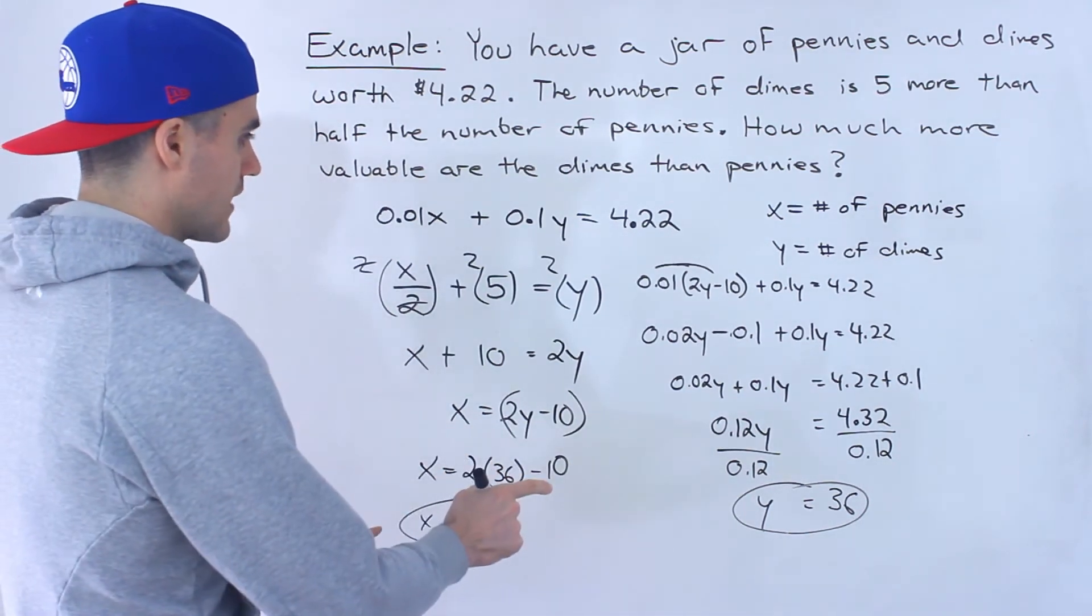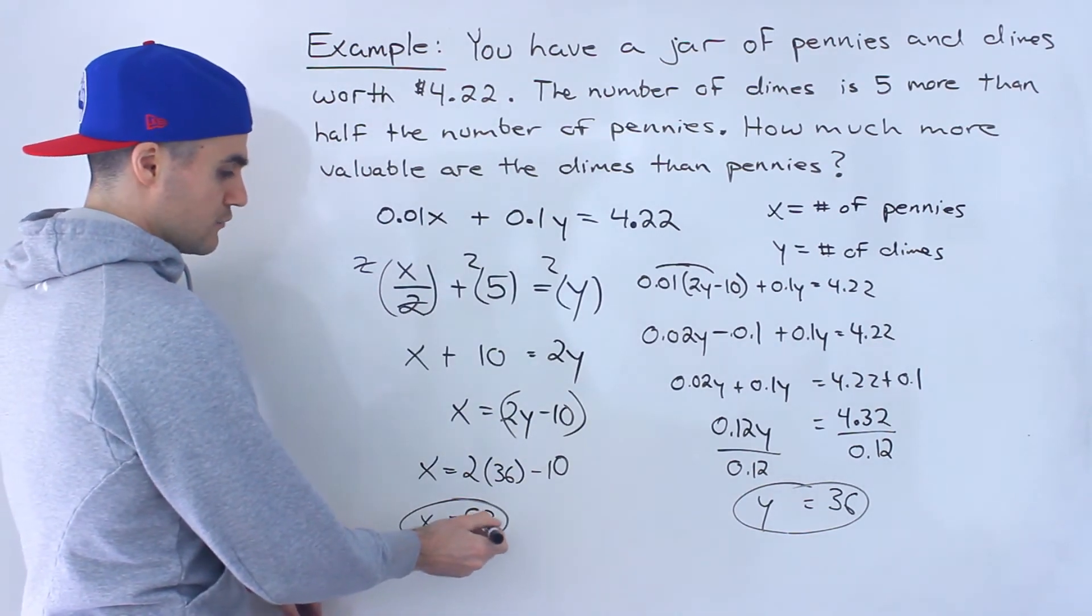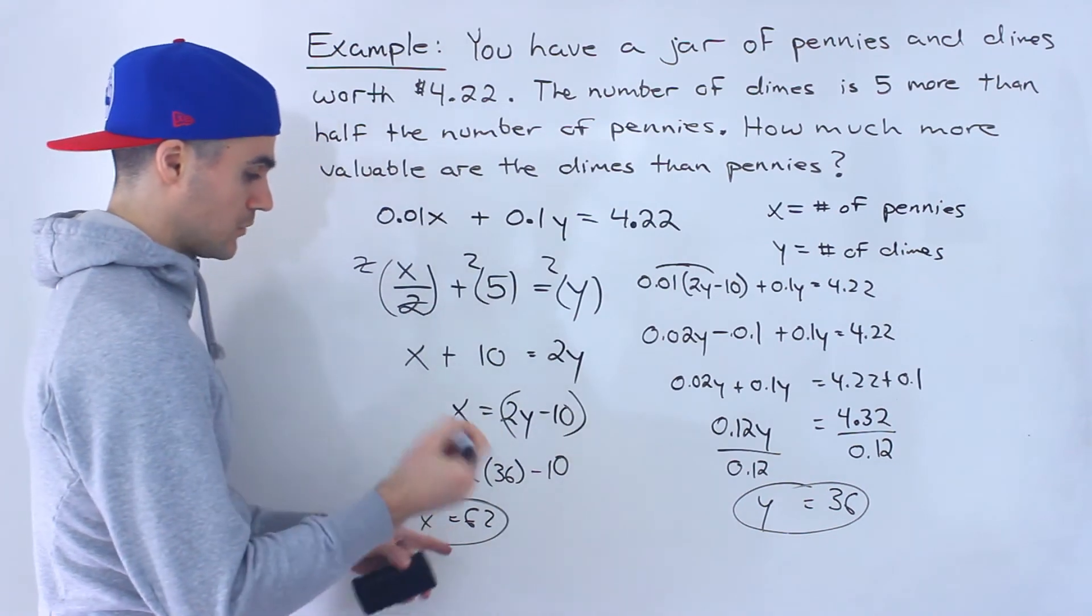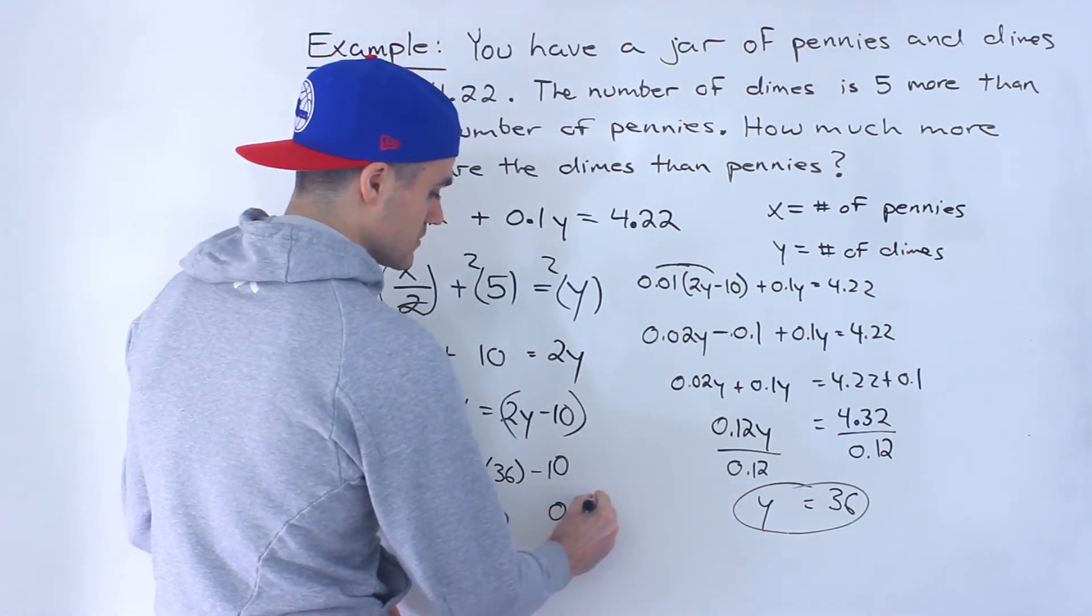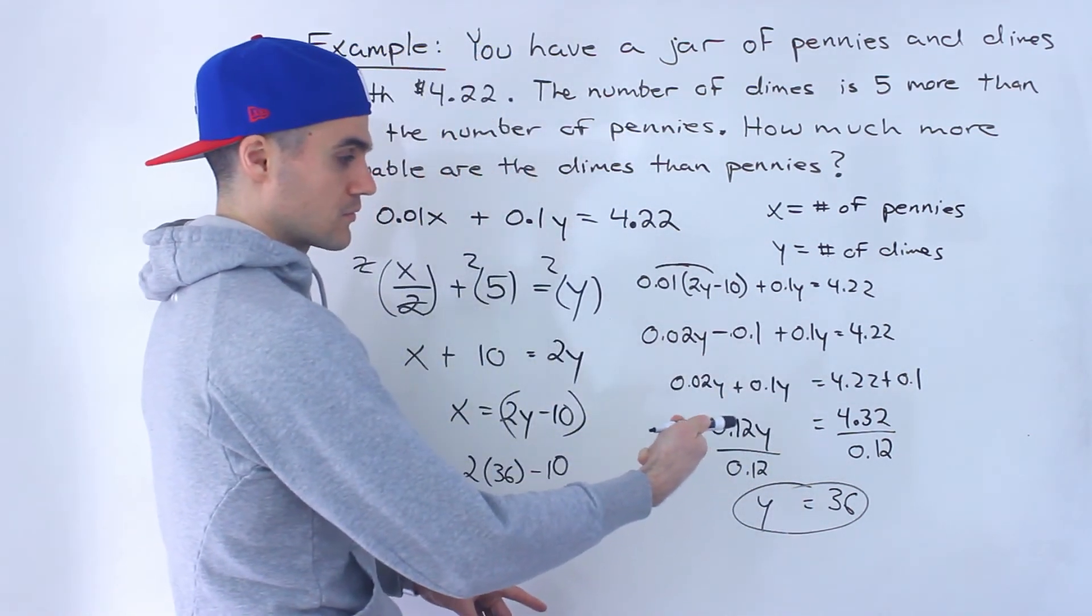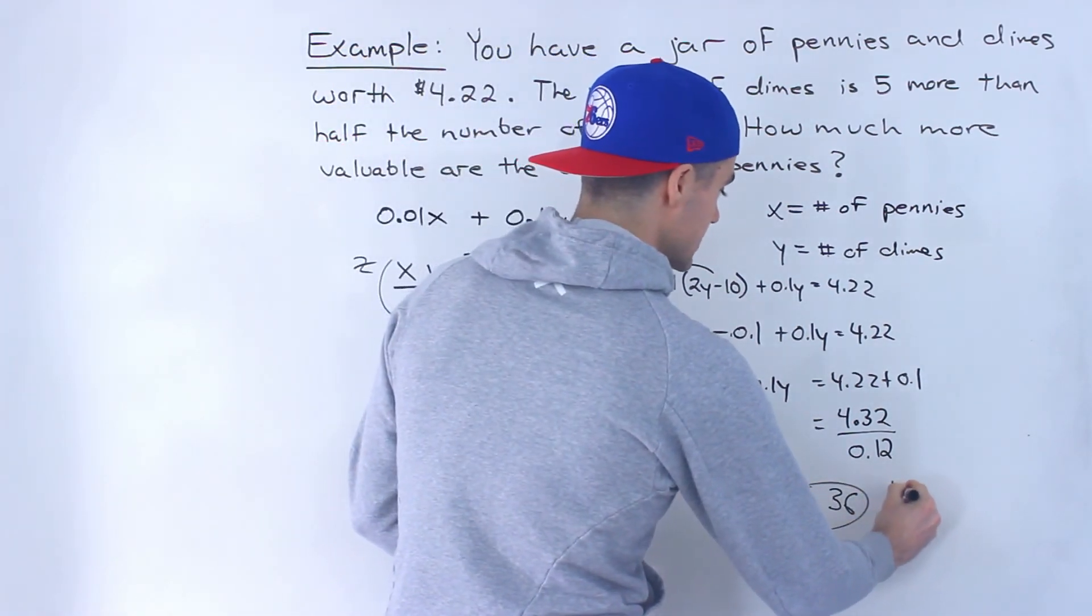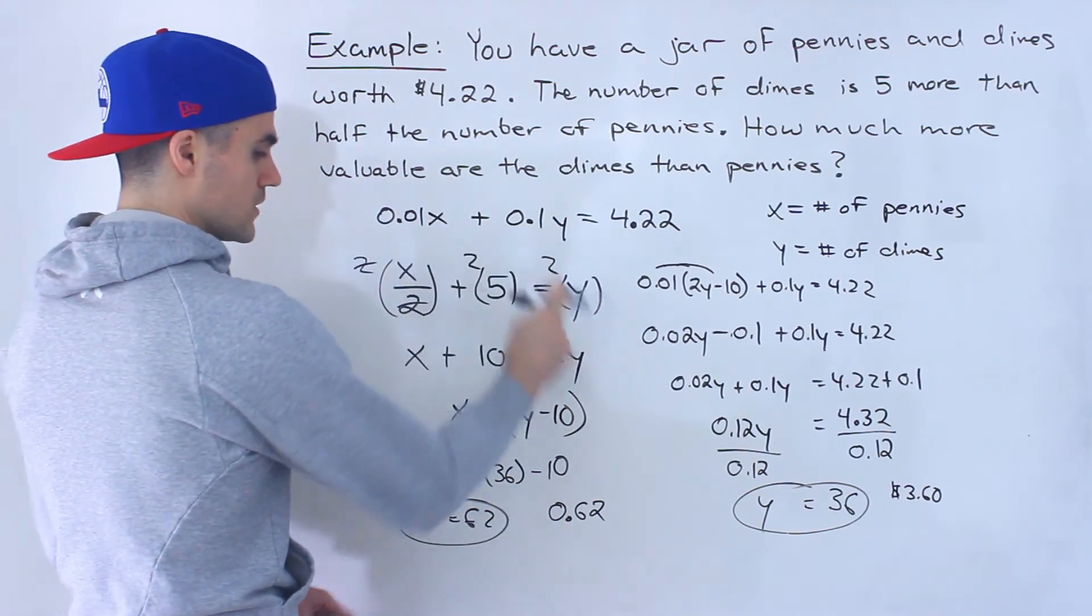And then you could check your answers. Notice, we can go through these. If we have 62 pennies, what's the value of that going to be in dollars? Well, we would multiply that by 0.01, so that would be just 62 cents. And then what's the value of 36 dimes going to be? We would multiply that by 0.1, so that would give us 360.